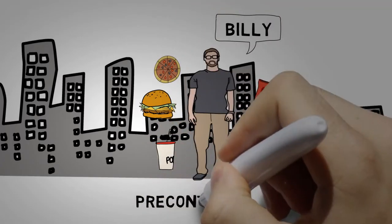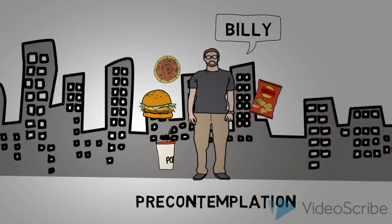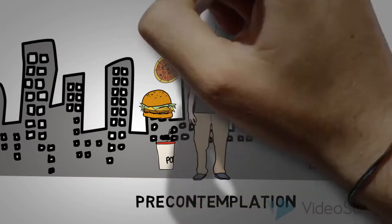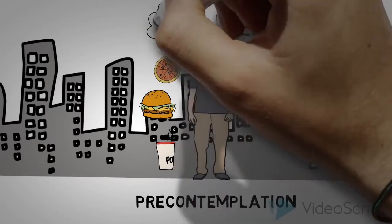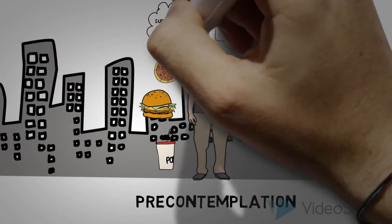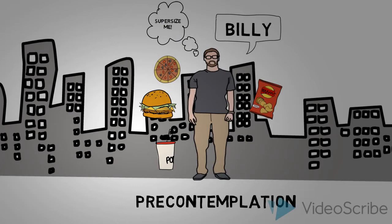He is in the stage of Pre-Contemplation, meaning he has not thought about the effects of eating fast food for many of his meals. To progress to the next stage, the first process of change, conscious raising, is applied. He may have heard about the movie Super Size Me and found out that a fast food diet is very unhealthy.